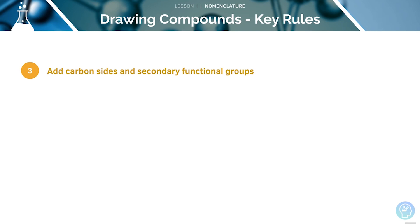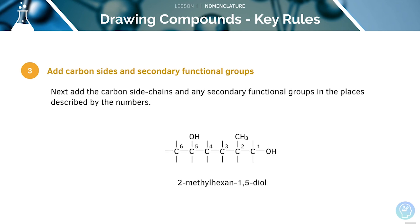Next, we can add the carbon side and secondary functional groups. Again, we'll need to use numbers to do this. Here, we can see that we have a methane off the second carbon and two OH groups. One of these is off the first carbon, whilst the other is off the fifth.